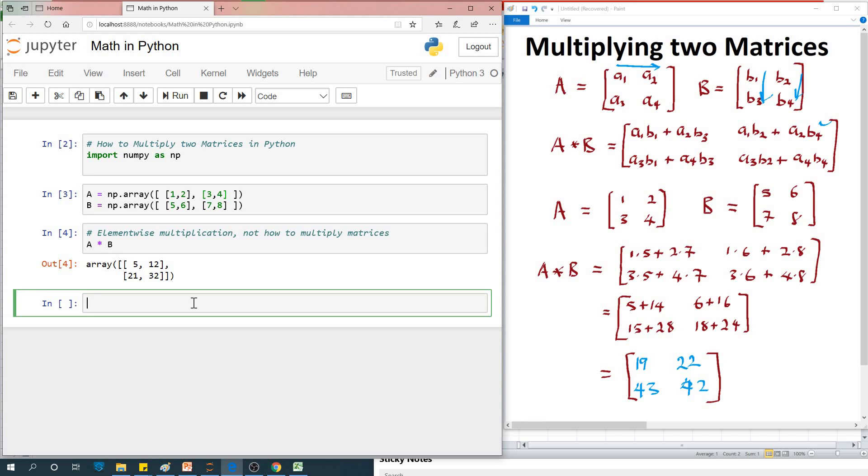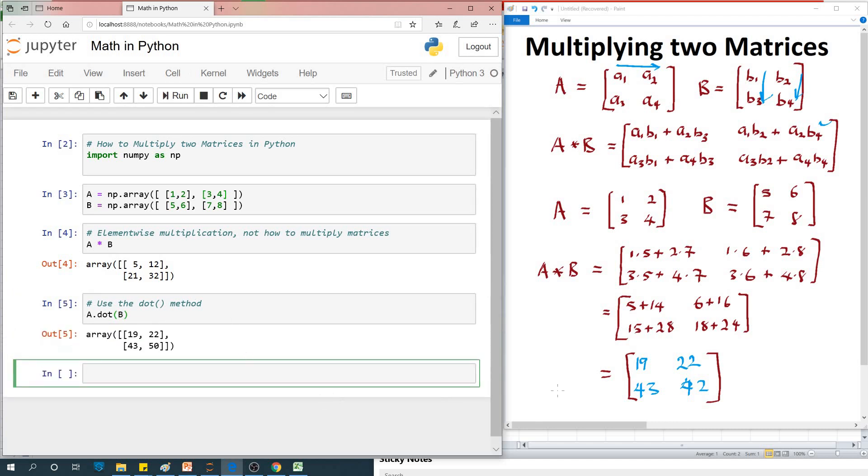To be able to get the right answer, you are going to use the dot method. How to use the dot method? You can just say a.dot and then specify the second matrix as a parameter. If you run it at this time...